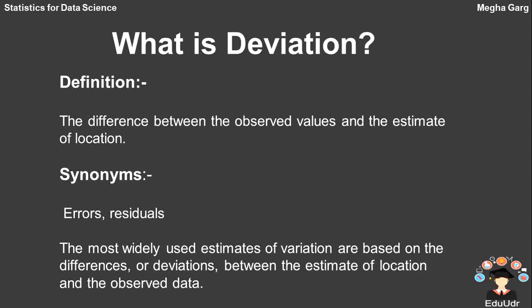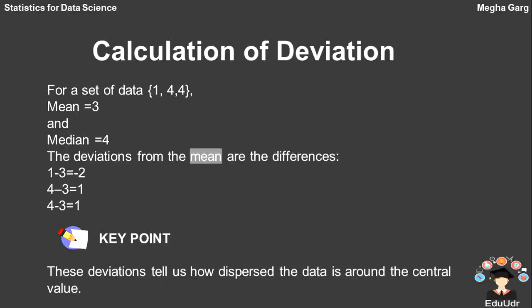Let's start with the calculation of deviation for a set of data: 1, 4, 4. The mean is 3 and the median is 4. So the deviations from the mean are the differences: minus 2, 1, and 1. The key point is that deviations tell us how dispersed the data is around a central value.